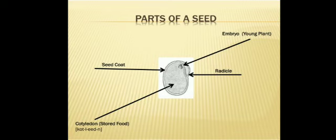Thirdly, one more part inside the seed is the embryo. What is the meaning of embryo? A small baby. It is a tiny small part hidden at the base of the seed leaves — embryo, small part hota hai seed ke andar.